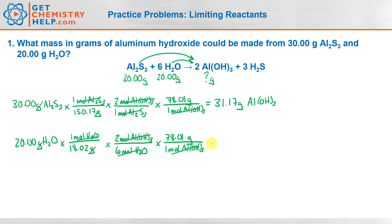We put that into our calculators and check our significant digits: we have four, four, exact, and four — so it must be four. I got 28.86 grams of aluminum hydroxide from 20.00 grams of water.